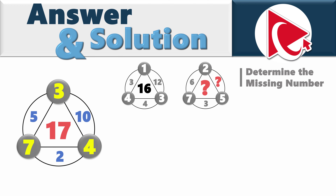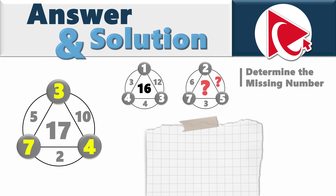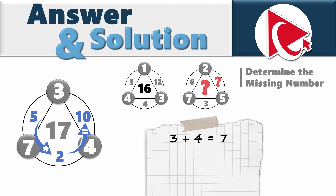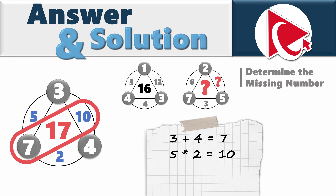Let's look at the example. If you look closely at the numbers in small circles — 3, 4, and 7 — you can easily see that 3 plus 4 equals 7. Looking at the numbers inside the larger circle: 5 multiplied by 2 equals 10. You need to move counterclockwise here. 7 and 10 are results of the calculations. 10 plus 7 equals 17, which represents the middle number.